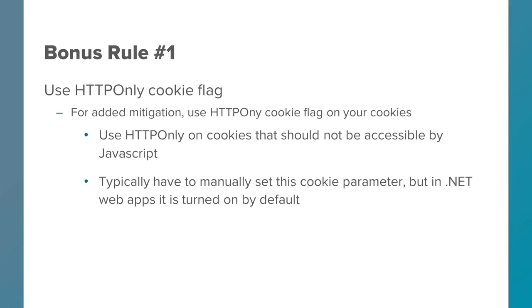Bonus rule number one for preventing cross-site scripting vulnerabilities: use the HTTP-only cookie flag. This is an additional mitigation to prevent cross-site scripting. You would set the HTTP-only cookie parameter on cookies that should not be accessible by JavaScript. Typically you have to manually set this cookie parameter, but in .NET Web Apps it's turned on by default, so it's good to be aware of that.